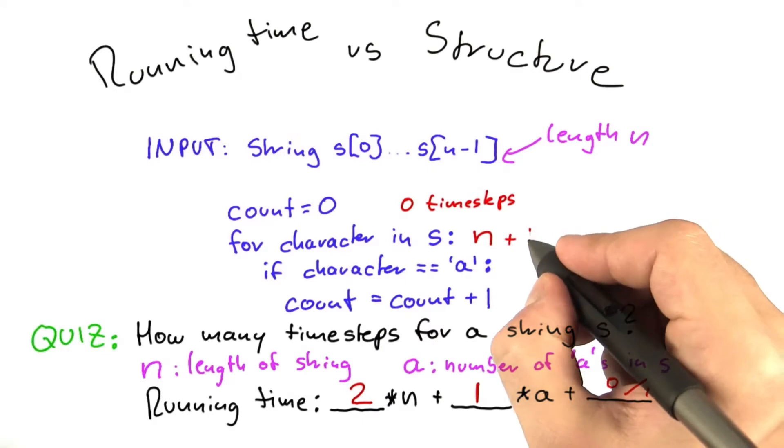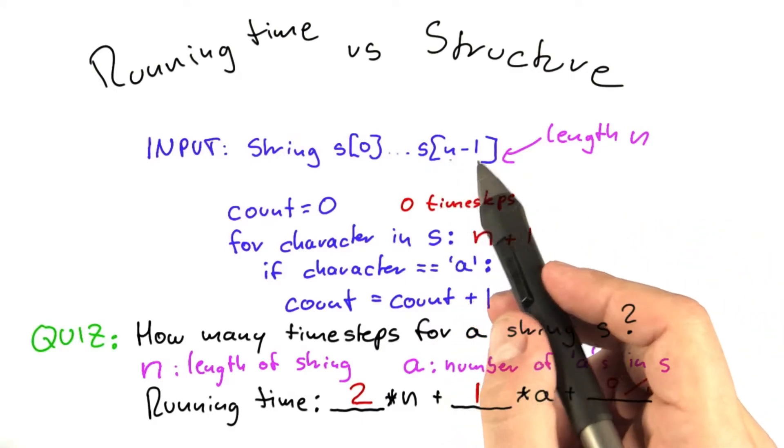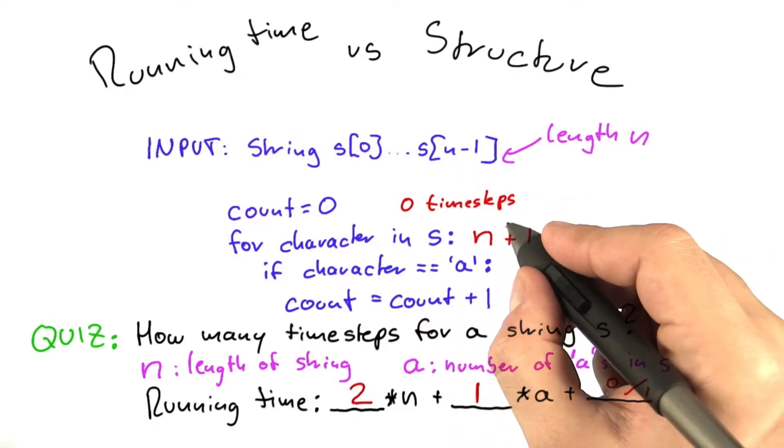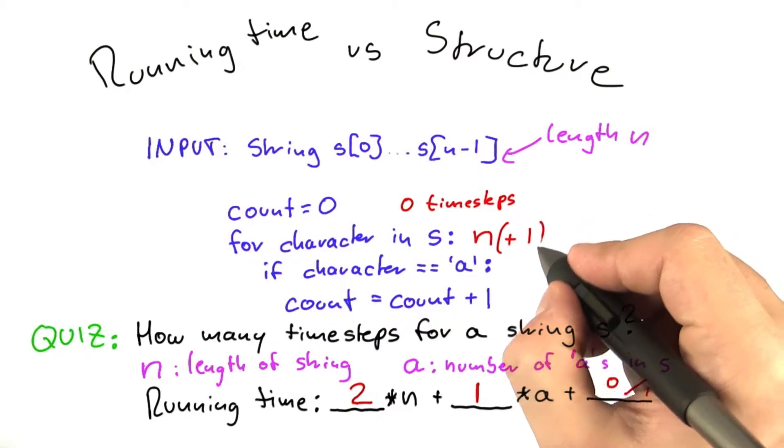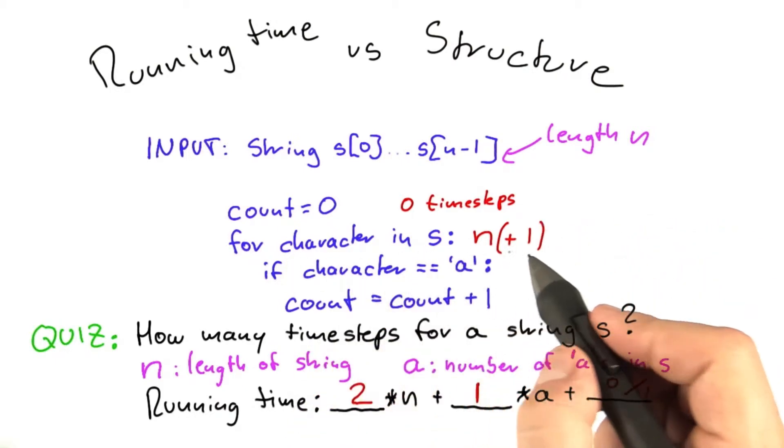or it takes n plus 1 loops if you assume that it's executed like a for loop or a while loop. So this again shows that it can be very annoying to do exact time counting.